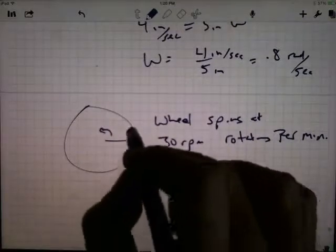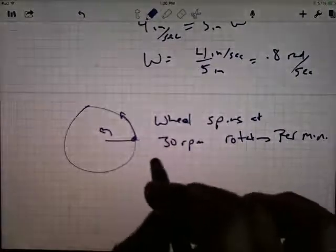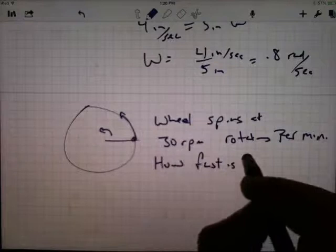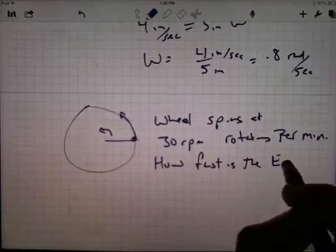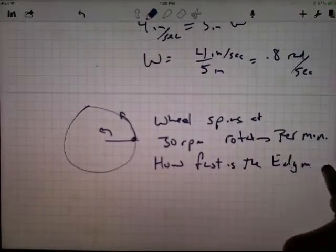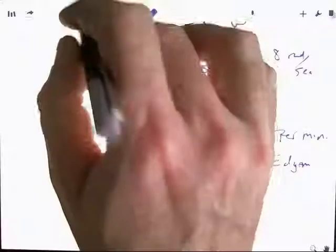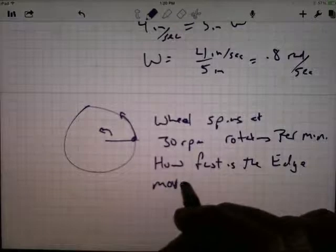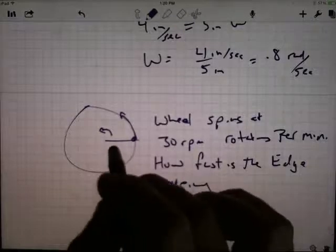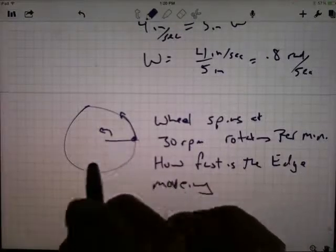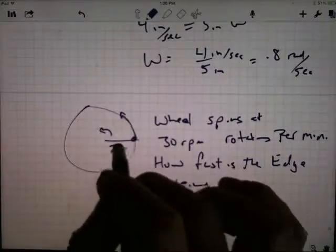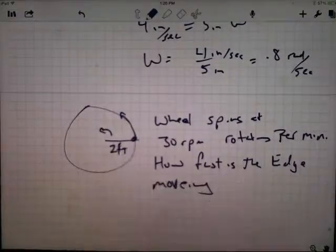The question is, if you look at a point on the edge, how fast is it moving, how fast is the edge moving? Well, I need one more bit of information because I need to know the radius. So let's say the radius is two feet.